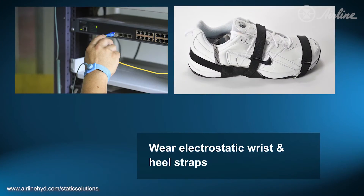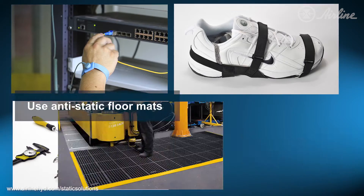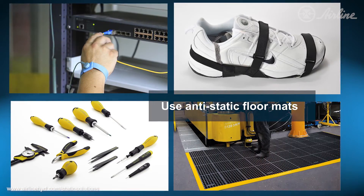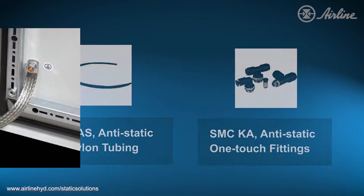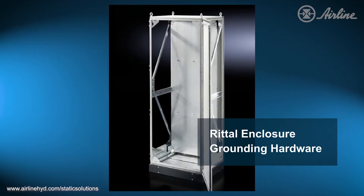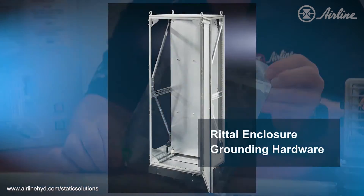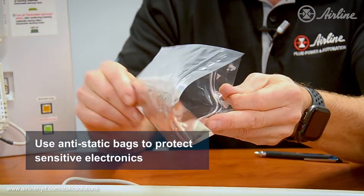The last best practice is to use simple grounding devices to help dissipate static charge. These devices don't get rid of existing static charge, but they help prevent charge from building in the first place. Electrical tool operators should wear electrostatic wrist and heel straps, use electrostatic safe tools, and be standing on anti-static floor mats. Anti-static tubing and fittings can also be used within your system, along with static shielding devices and enclosures for your electronics. Anti-static bags can also be used to protect your product from ESD events.